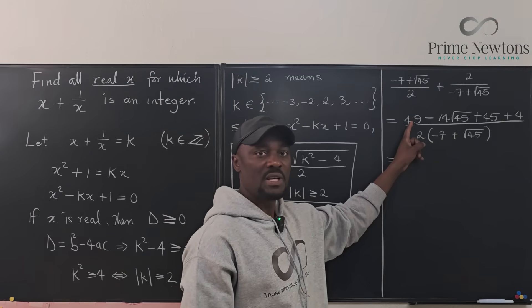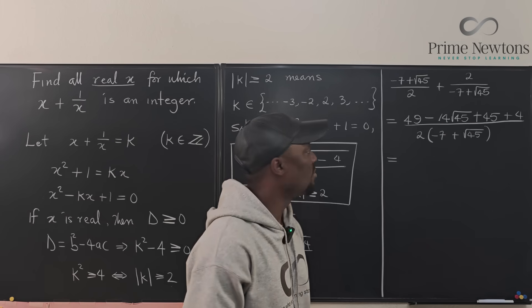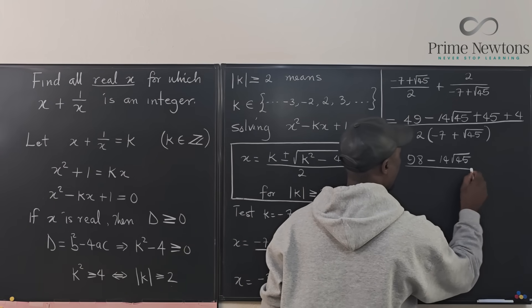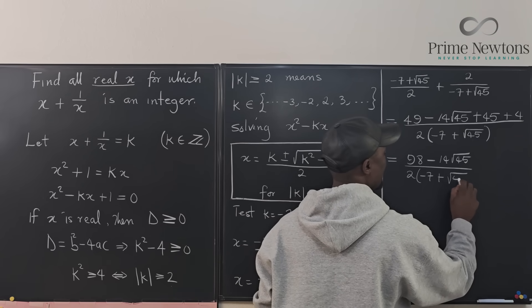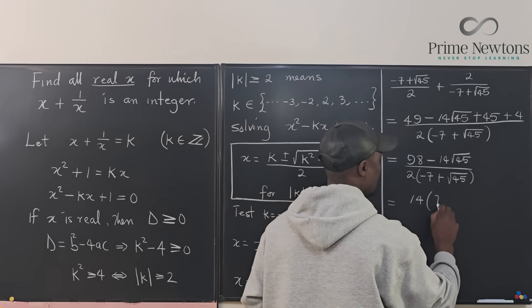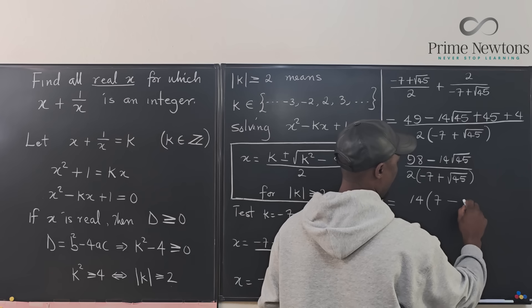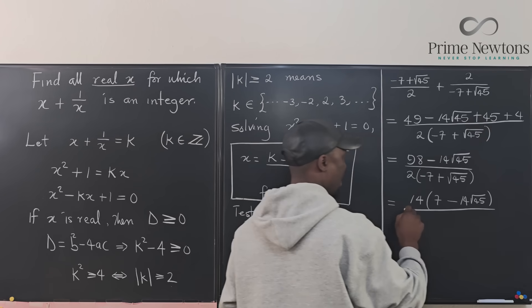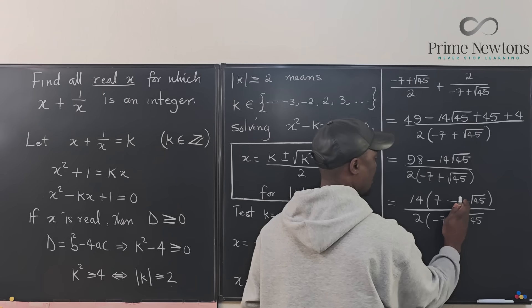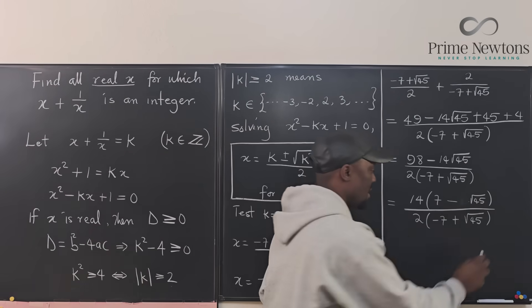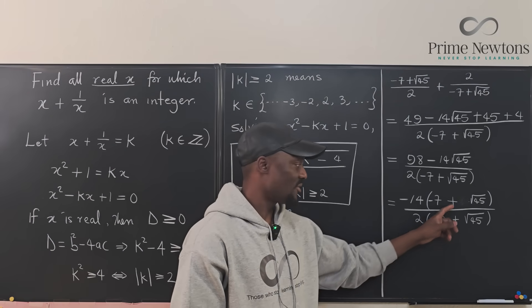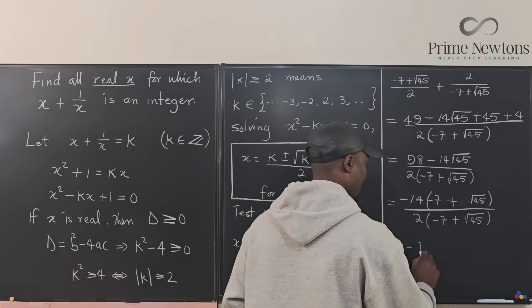Now pay attention to the top. This is 49. This also is 49. So I have 49 in two places. So this is going to be 98 minus 14 rad 45 divided by 2 times negative 7 plus rad 45. So we know that 14 divides 98 seven times. So we're going to take out 14. And you can see the signs here are switched or maybe let's take out negative 14. So this is negative 7 and this positive 45. You see, this cancels this and 2 divides this.